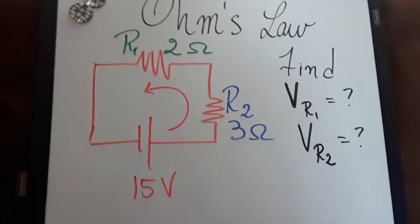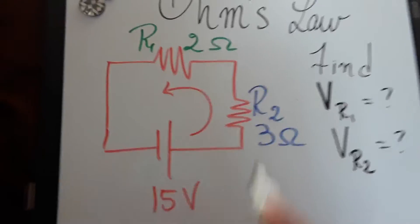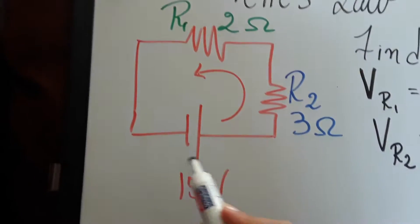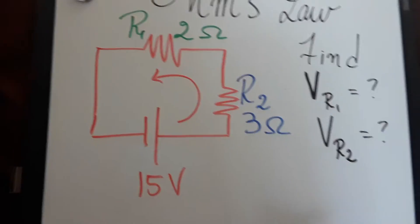So we have a series circuit, just two resistors, R1 and R2, with a battery, 15 volts.